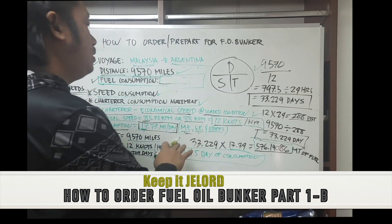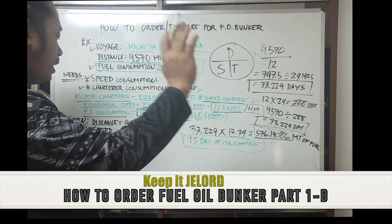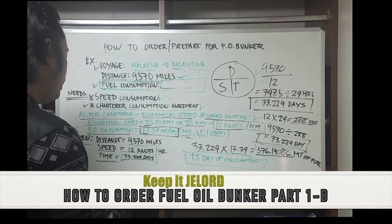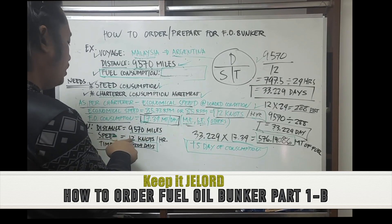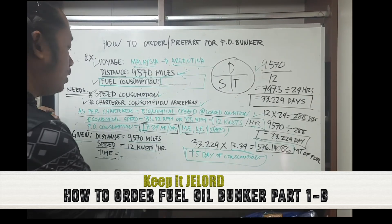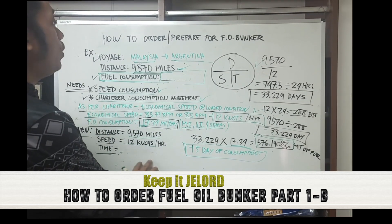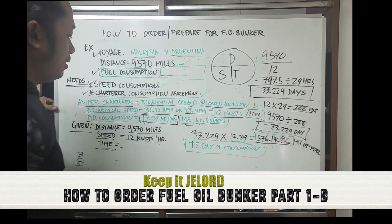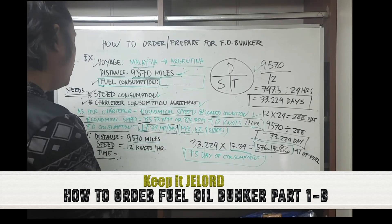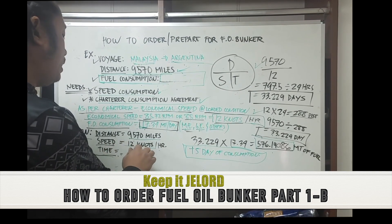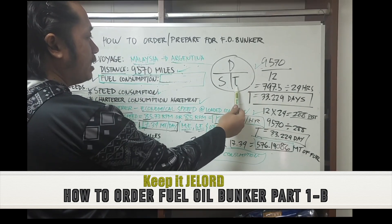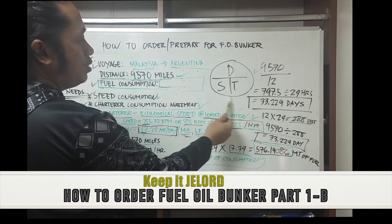Our distance is 9,570 miles and our speed is 12 knots per hour. We need to find out how many days it will take to arrive in Argentina. The formula is distance, speed, and time. If you remember this formula, it was already taught in high school.